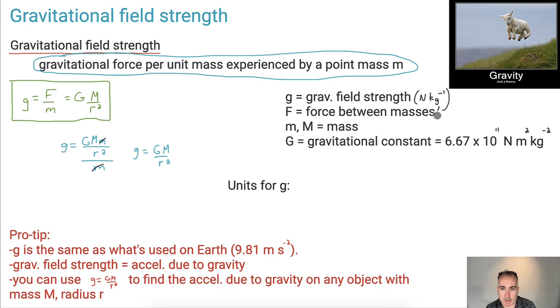Force between the masses is in newtons. The masses are just going to be in kilograms. And we have our good old gravitational constant, 6.67 times 10 to the minus 11.